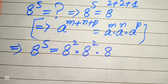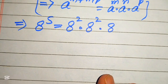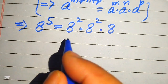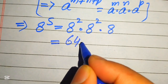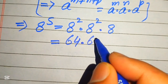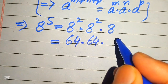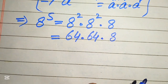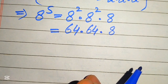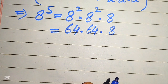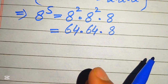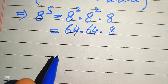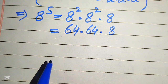We know that 8 squared equals 64, so 8^5 becomes 64 multiplied by 64 multiplied by 8. Since a calculator is not allowed in this problem, we need to show all the working on paper in order to gain full marks in the exam.